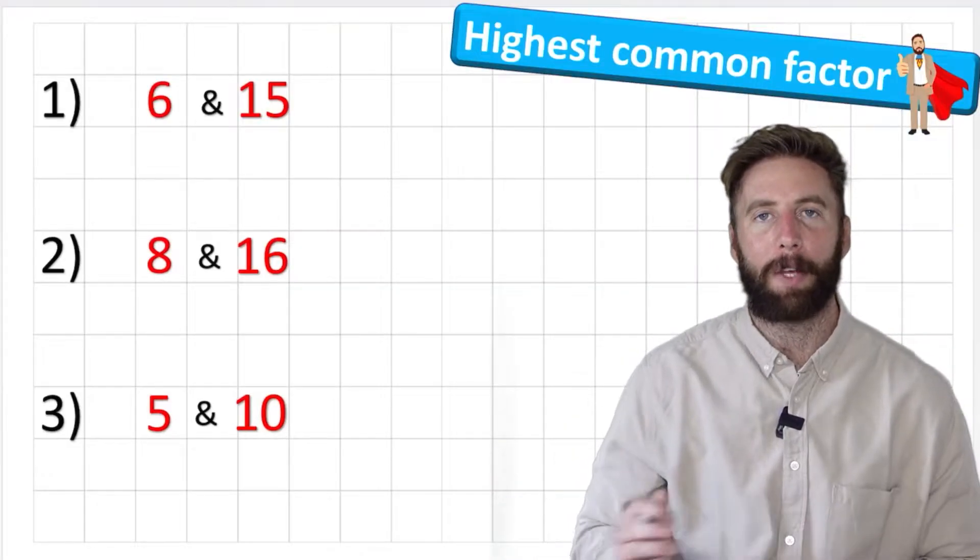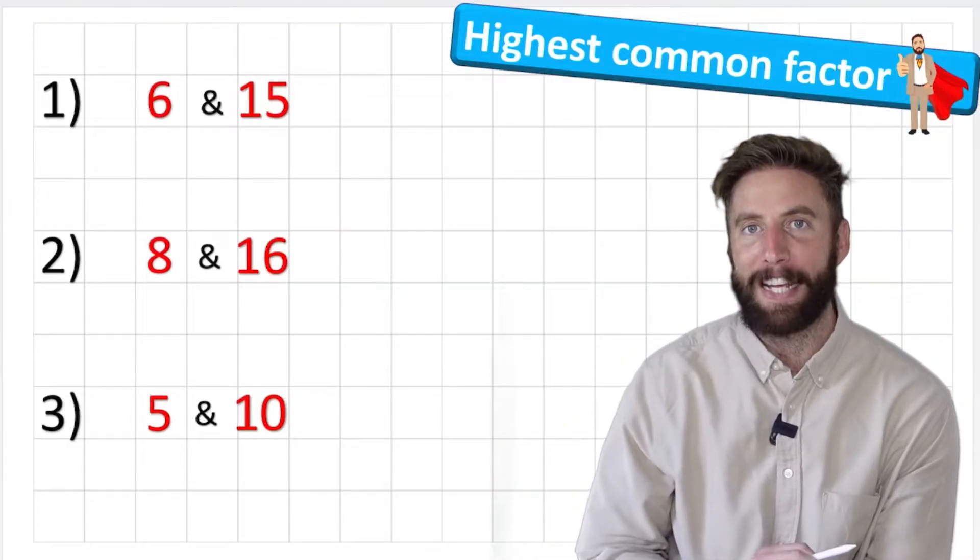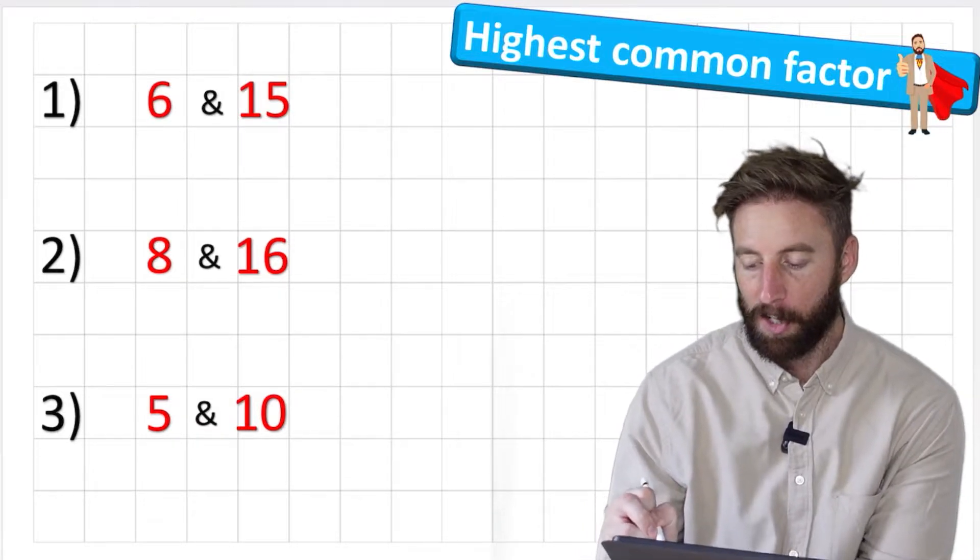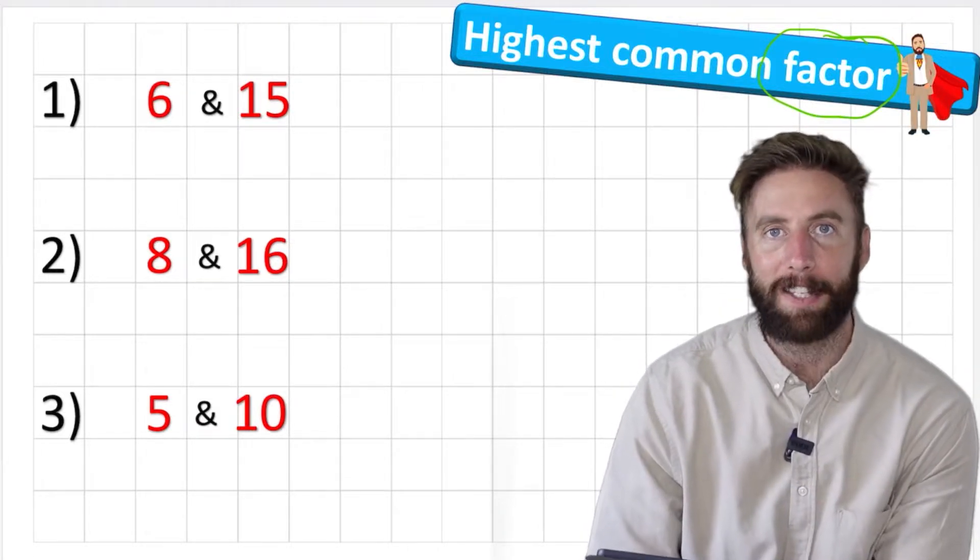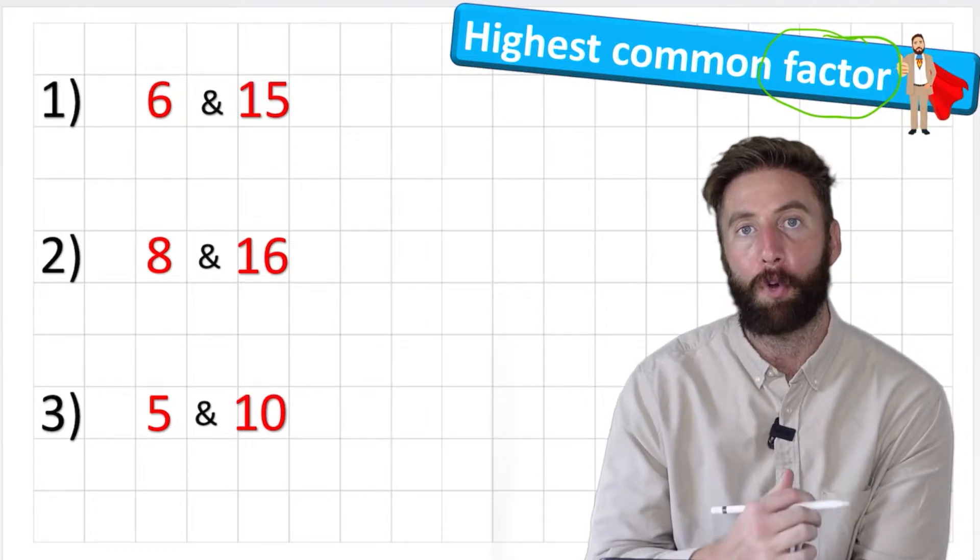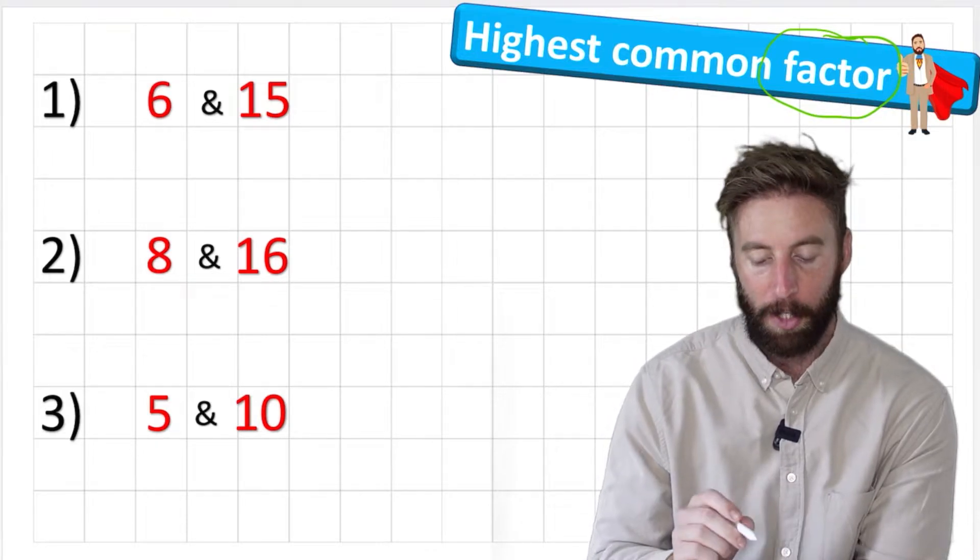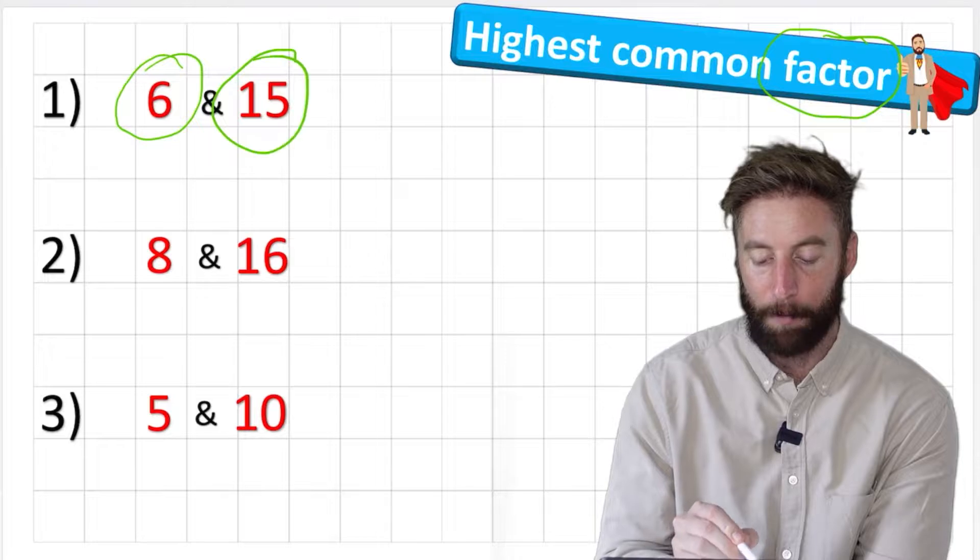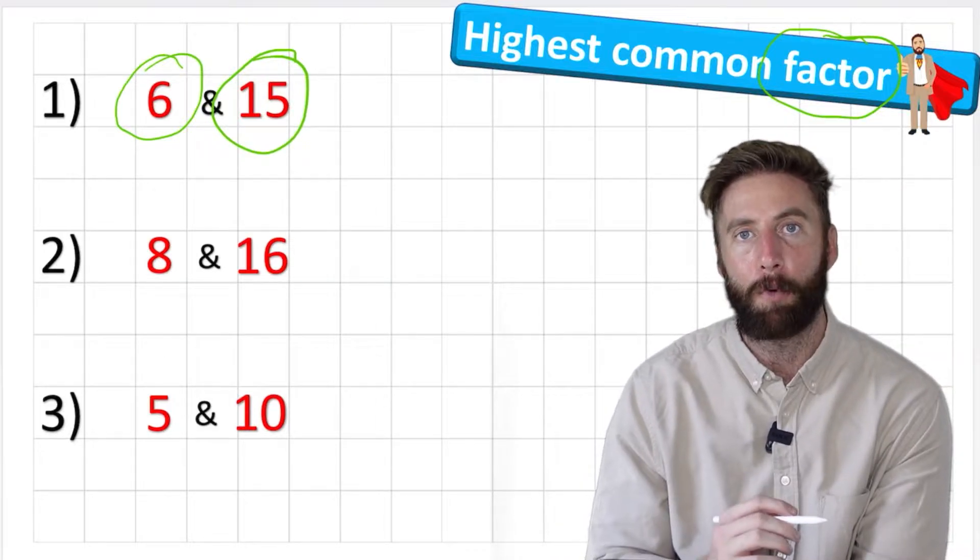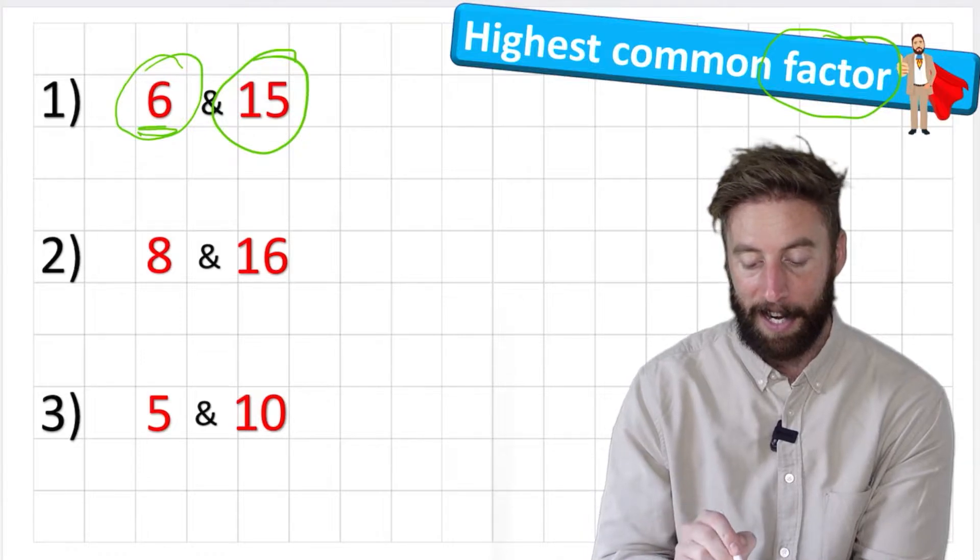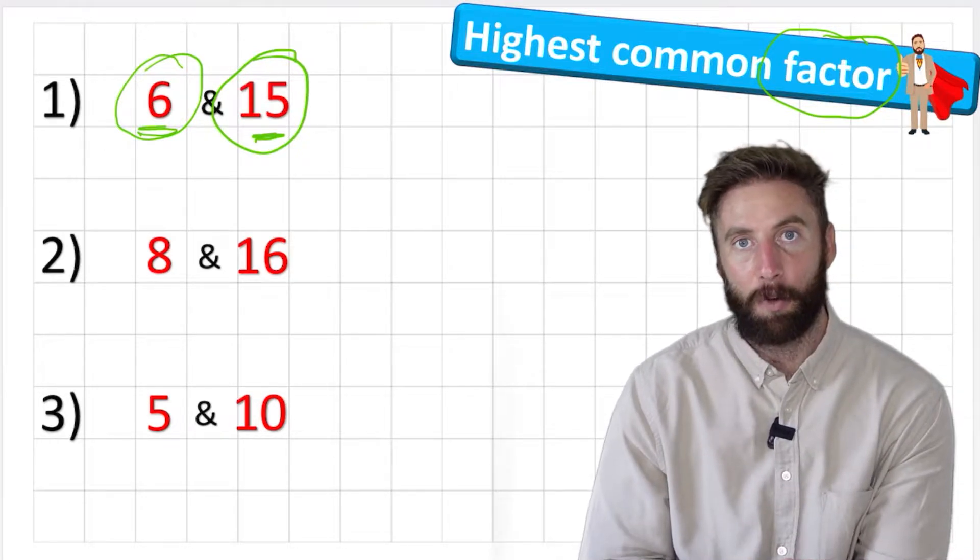Okay so where are we going to begin? Well we're going to look at what the phrase actually says first of all and we're going to think about these three words. Let's start with factor. So what is a factor? Well a factor are any two numbers that when multiplied together equal the product of the number that we're talking about.